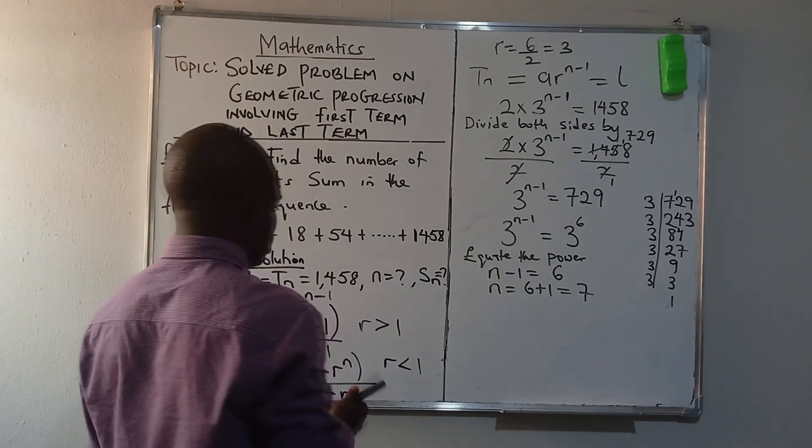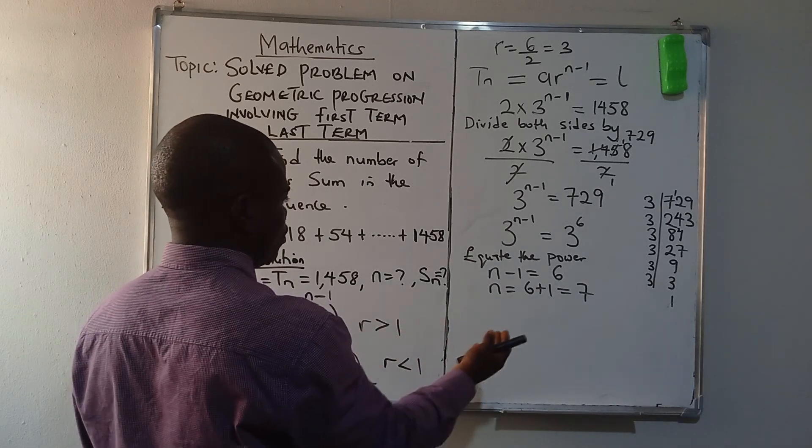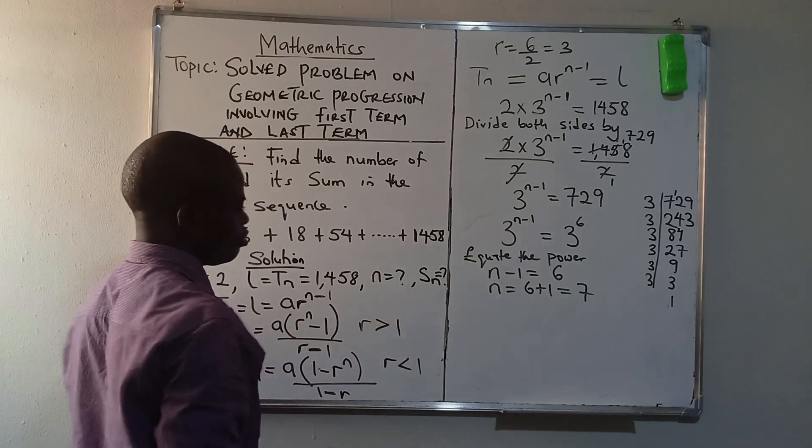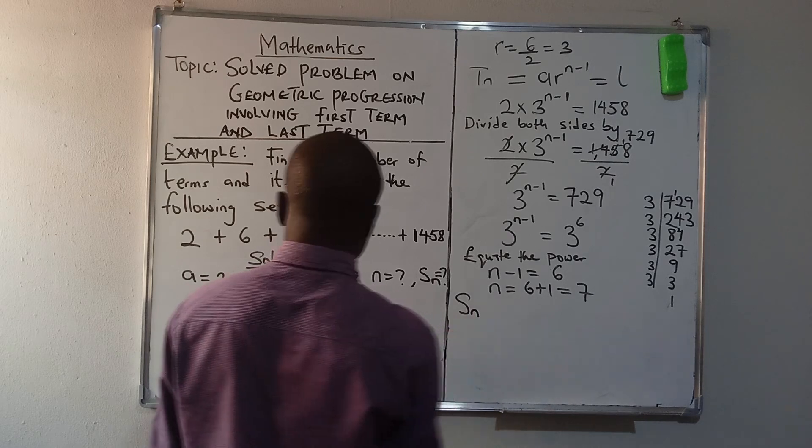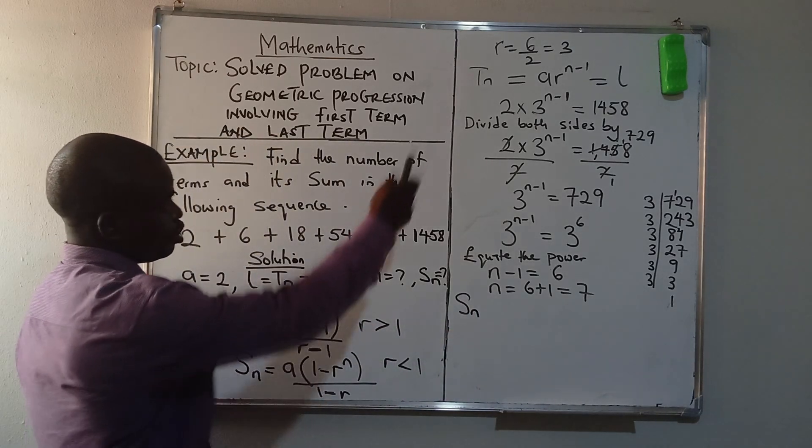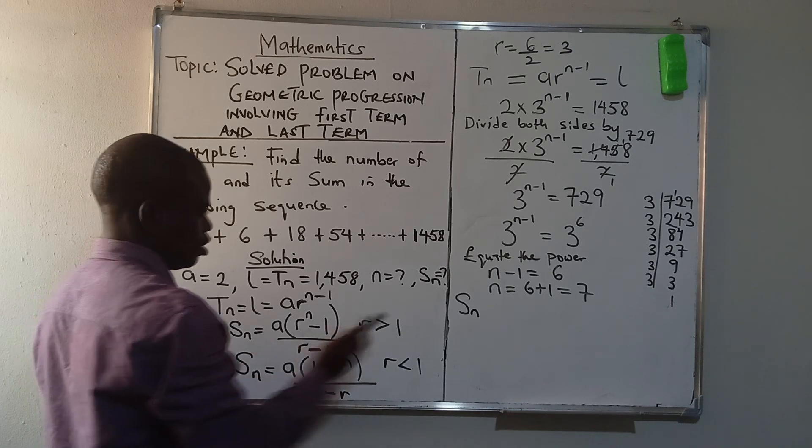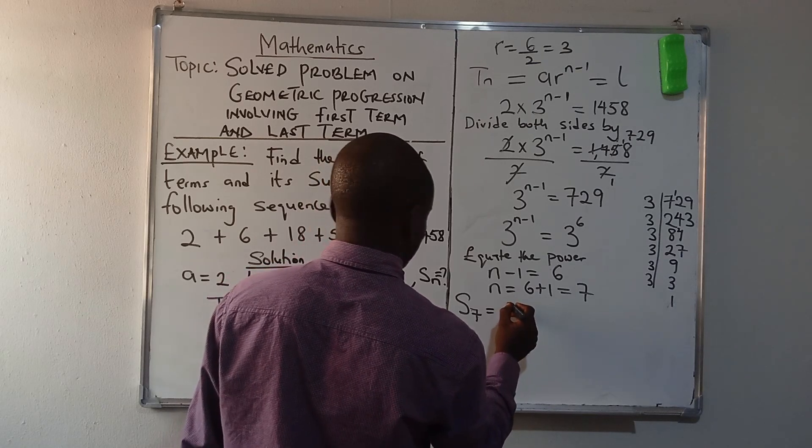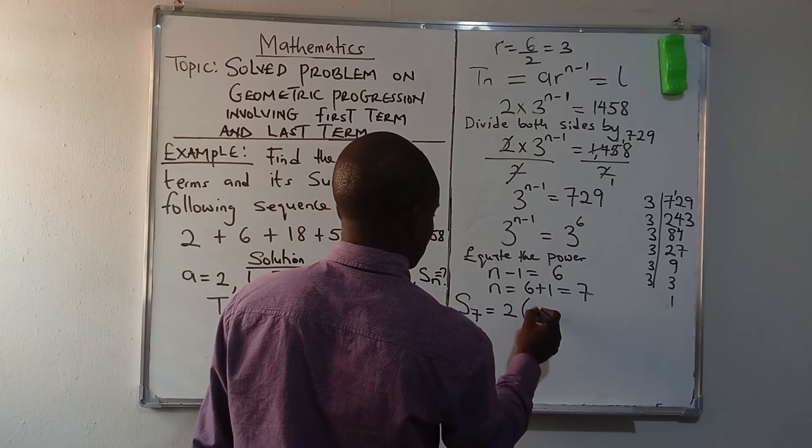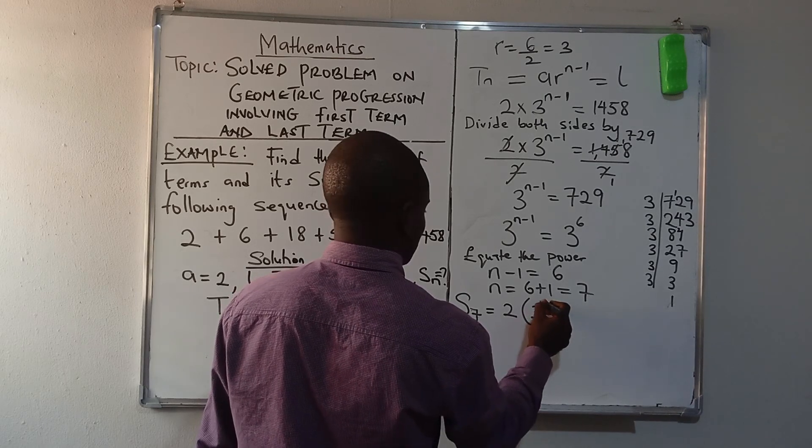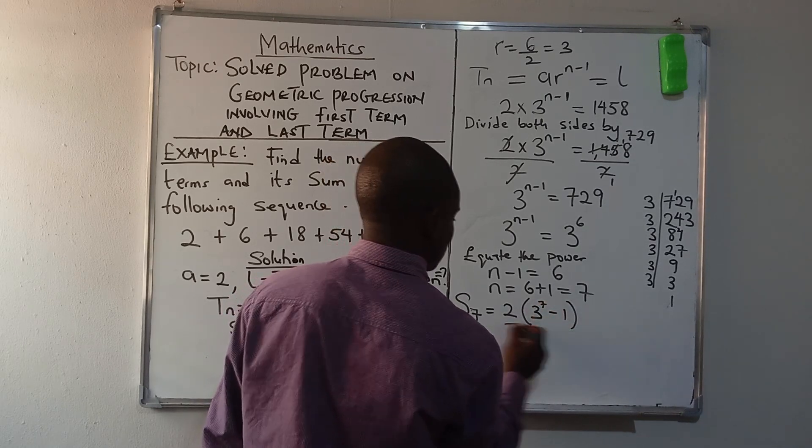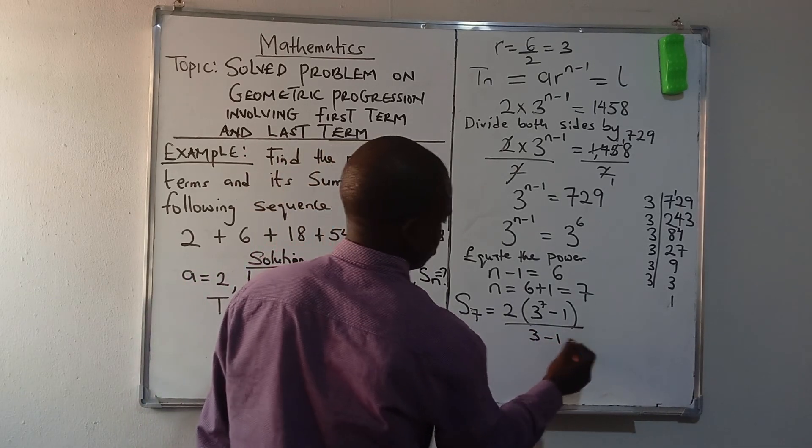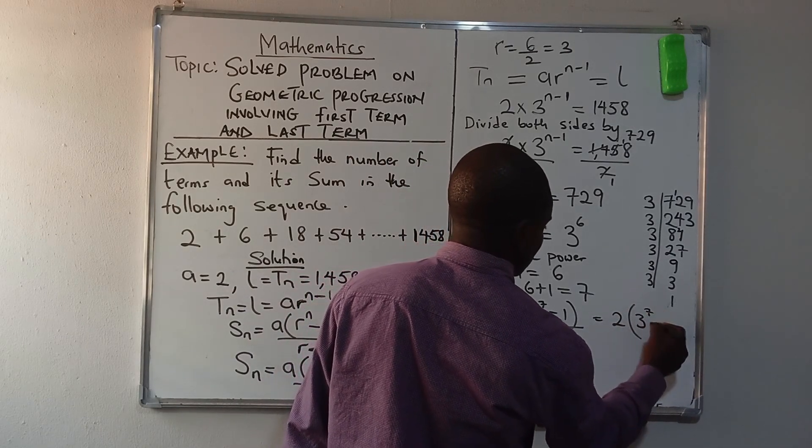You can see that it's very easy to get when you know how to input your values. Now let's go for the sum since we are getting the number of terms. Sum equals, I'm making use of the first one because our common ratio is greater than 1. So sum equals the first term, which is 2, open brackets, common ratio 3 raised to power 7 minus 1 over 3 minus 1.